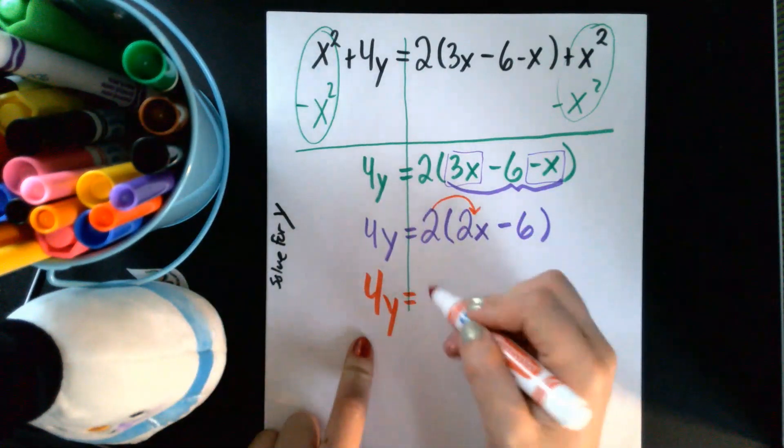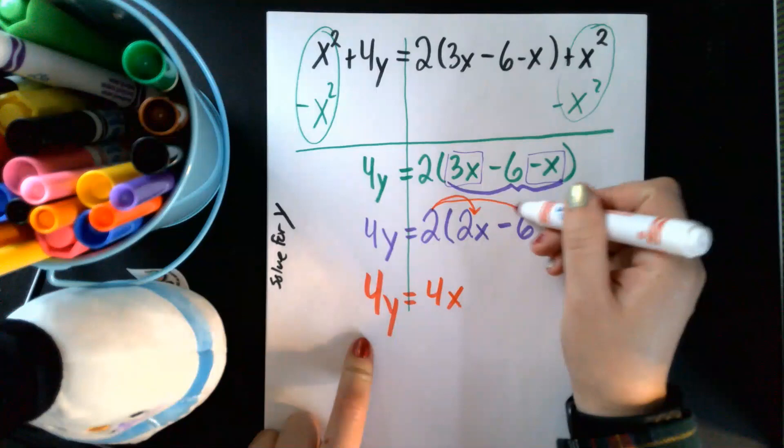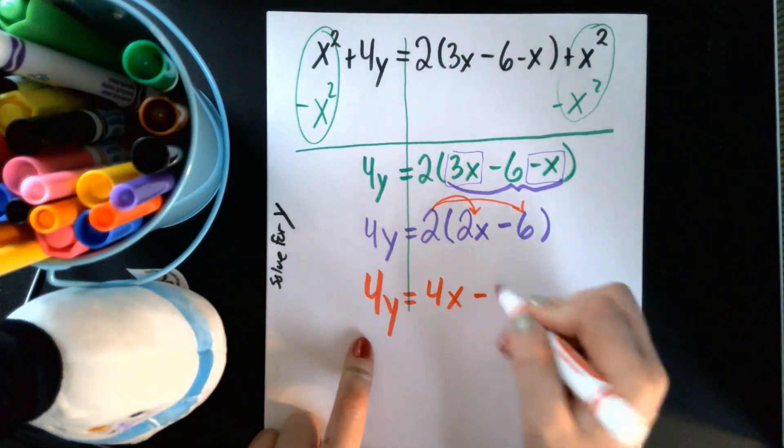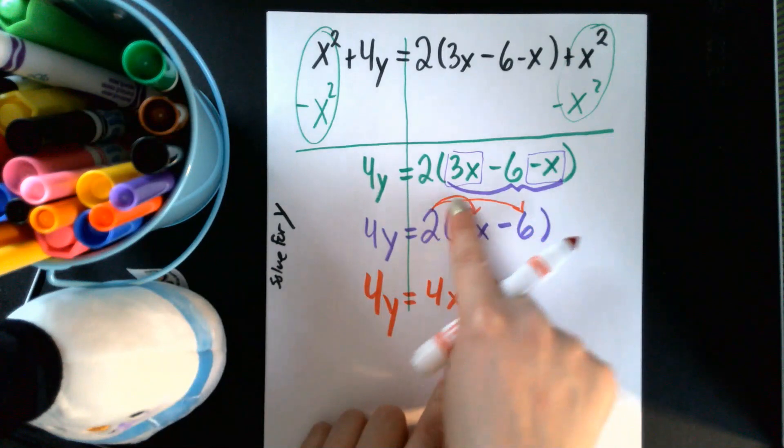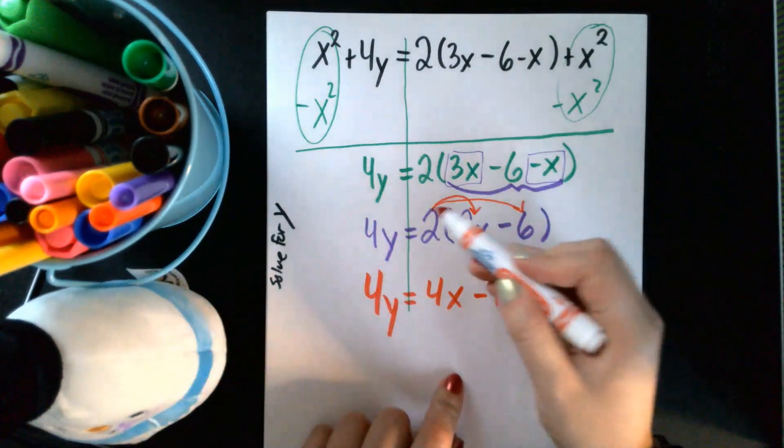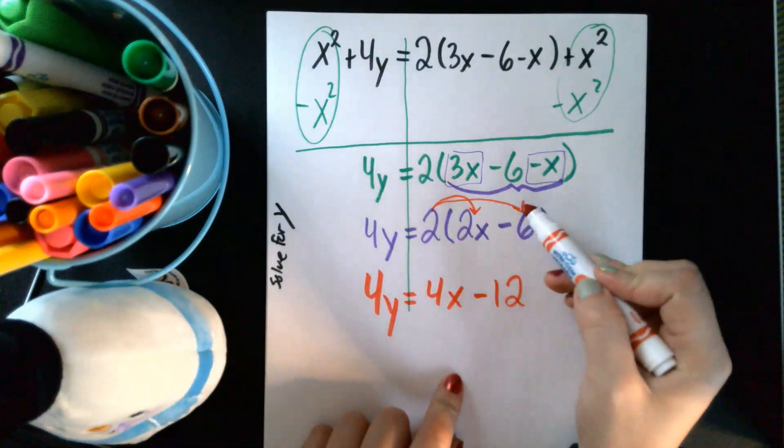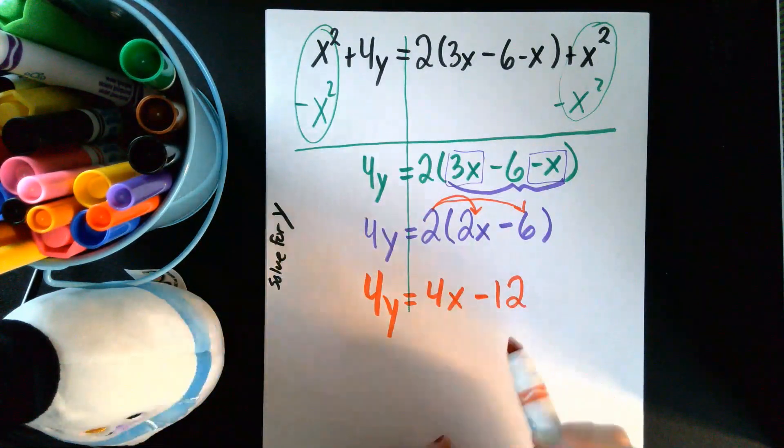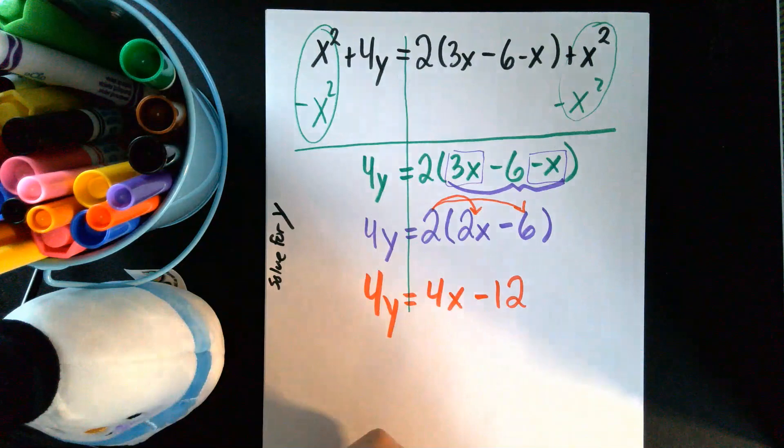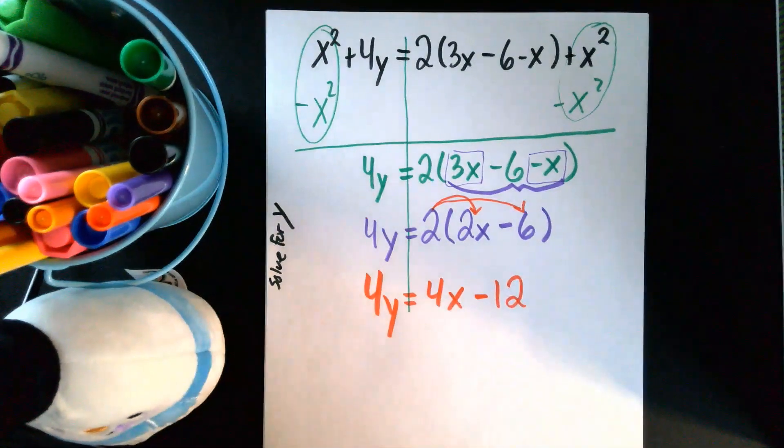So two times two X is four X, two times negative six is negative 12. I'd really recommend doing these arrows, especially doing them as you do things, because it kind of keeps you on track and keeps you accountable so that you know that you did both pieces. Very important, have to do both pieces.